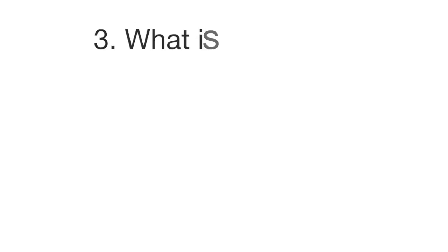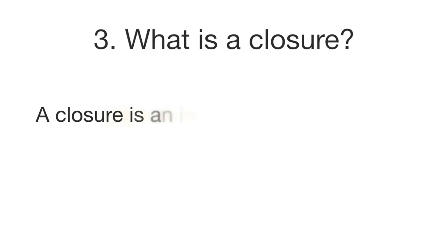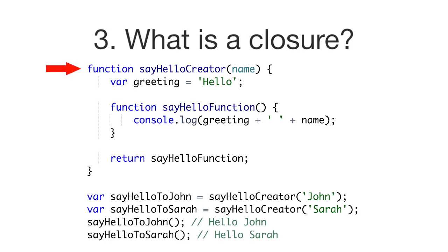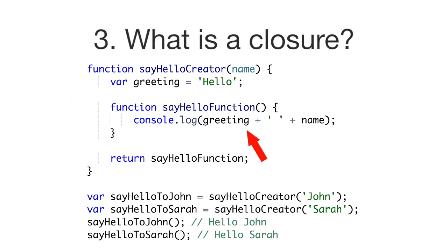Question number three: what is a closure? A closure is basically an inner function that has access to the outer or enclosing function's variables. Here we have an outer function called 'sayHelloCreator' — it returns an inner function called 'sayHelloFunction'. The sayHelloCreator function has a variable in its local scope named 'greeting'. The sayHelloFunction has access to the greeting variable and console logs it plus the name variable passed into sayHelloCreator.